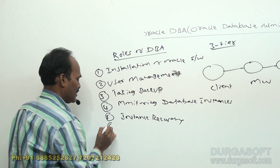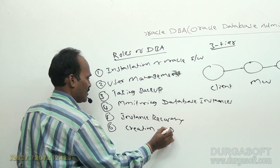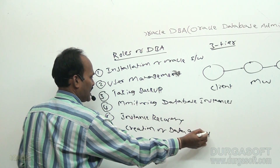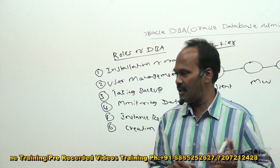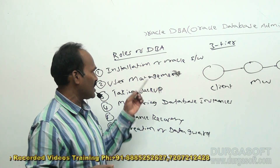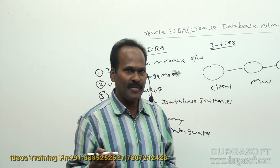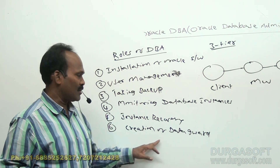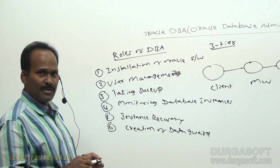The sixth responsibility is creation of Data Guard, which is part of the high availability architecture category. In case of database failure, the database administrator will have a standby database. Whenever the primary database fails, automatically the workload is handed over to the secondary database — that mechanism is called Data Guard. Configuring, creating, implementing, and maintaining the Data Guard mechanism is a major responsibility of the database administrator.